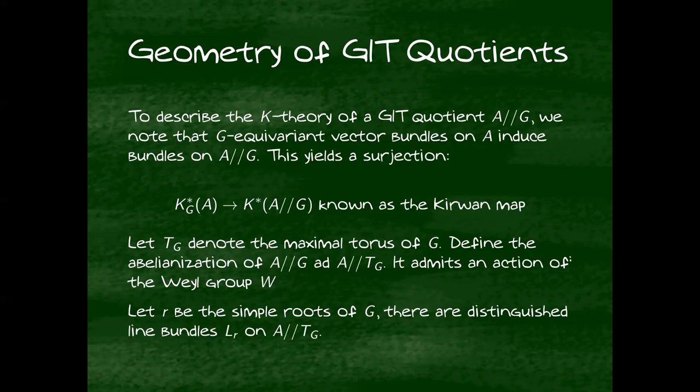Given a reductive group G with maximal torus T_G, the abelianization is taking the quotient by T_G instead of by G. The abelianization has an action of the Weyl group W of the torus. By this Kirwan map, it has line bundles L_R for each simple root. Caveat: this is not the same Weyl group as appears in Schubert calculus.